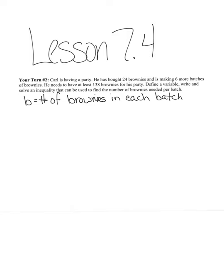So we know that he has 24 brownies — he's already got 24, and he's making six more batches. So we know he's making six batches; we just don't know how many brownies are in each. But that keyword, "each," tells me that I'm really going to take six times my variable.